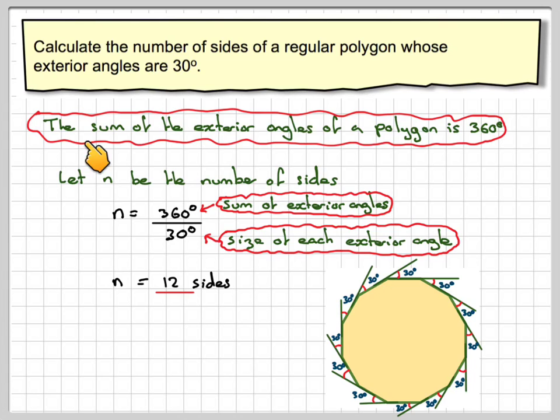So, this is the important fact here. The sum of the exterior angles of a polygon is 360 degrees. The reason being is you're going right round a complete circle.